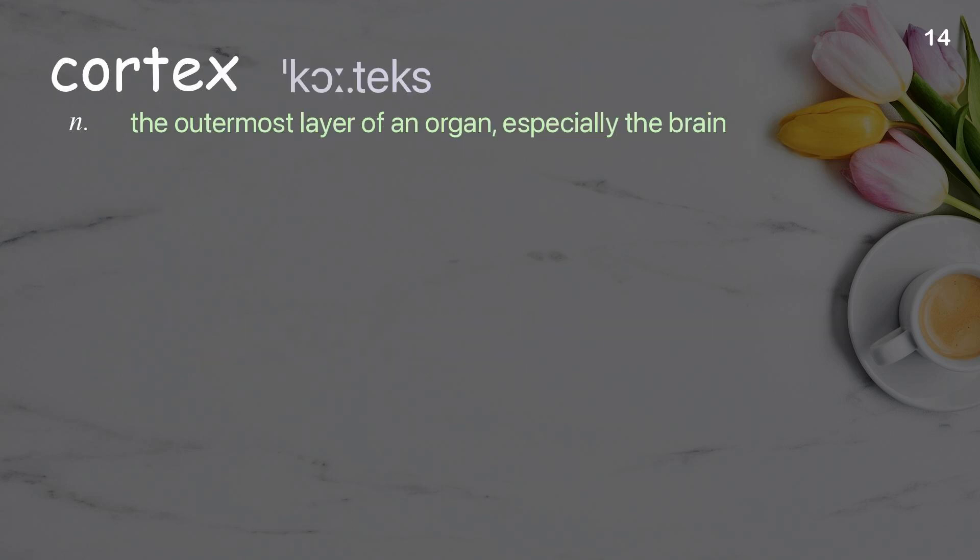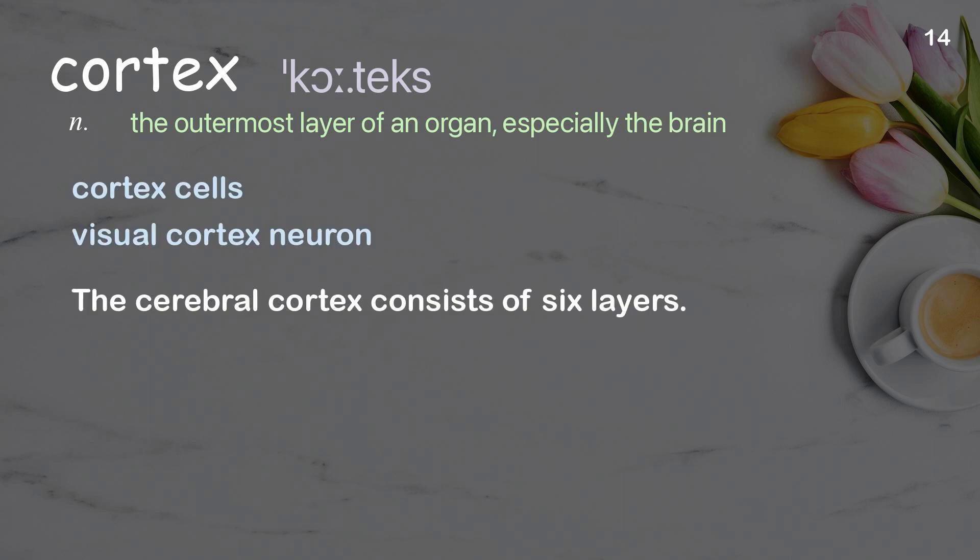Cortex: the outermost layer of an organ, especially the brain. Examples: cortex cells, visual cortex, visual cortex neuron. The cerebral cortex consists of six layers.